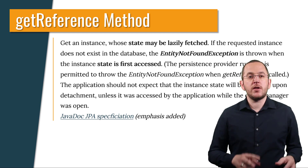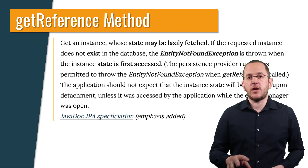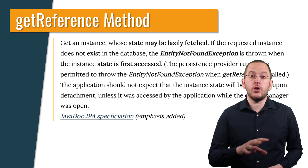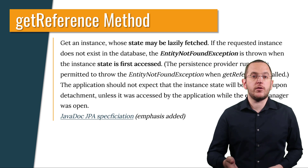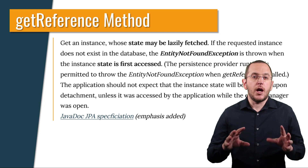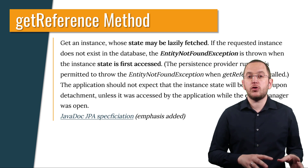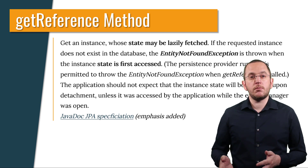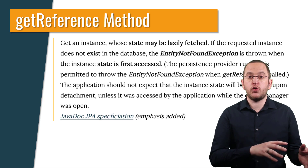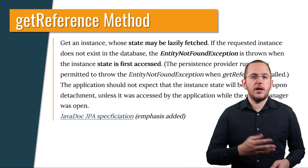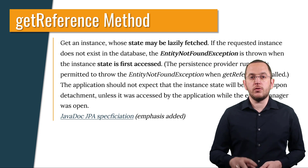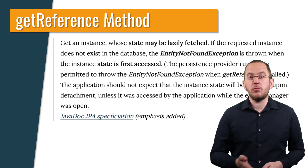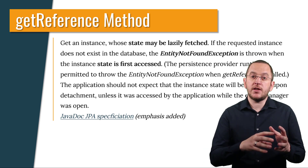The method's two most important characteristics are: the entity state may be fetched lazily, and you can get a reference to a non-existing entity, which will throw an EntityNotFoundException on first access. Both characteristics indicate what's happening internally when you call the getReference method. Instead of generating and executing a database query, Hibernate only instantiates and returns a proxy object using the provided primary key value. Hibernate generates the required proxy at runtime, intercepts all method calls, and triggers a database query when necessary.